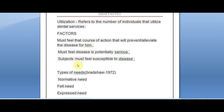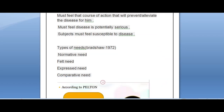Let's look at the types of needs given by Bradshaw in 1972. The first is normative need. For example, a patient has a few caries which are not symptomatic — no pain — and the dentist says the patient needs a restoration or filling. That is normative need: what the dentist feels based on professional norms, not what the patient feels.